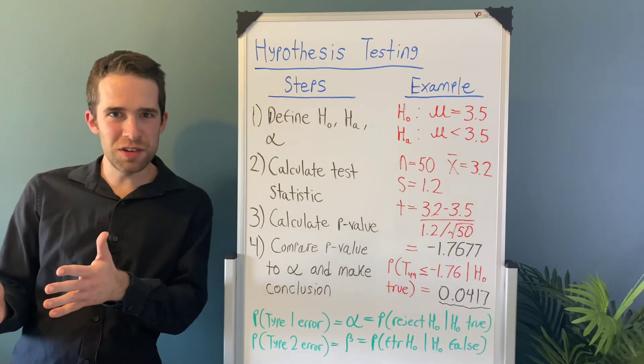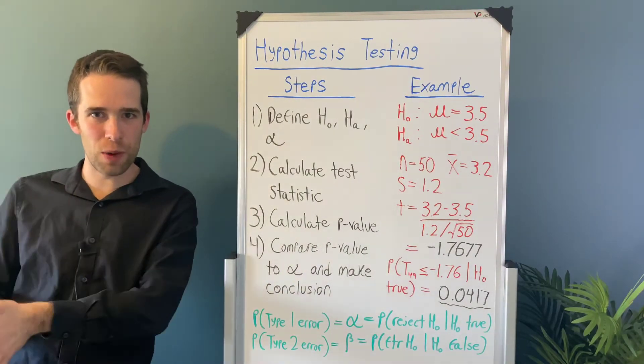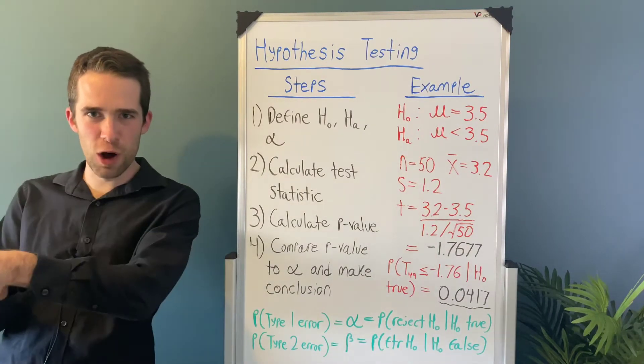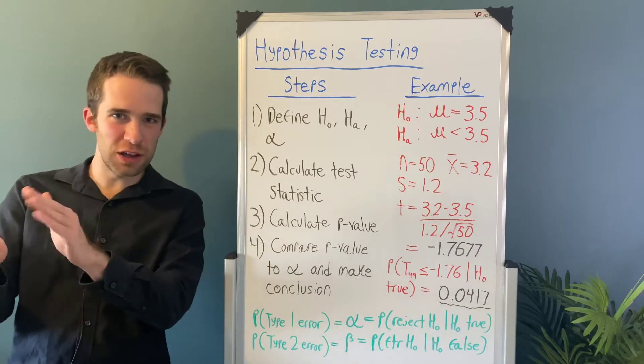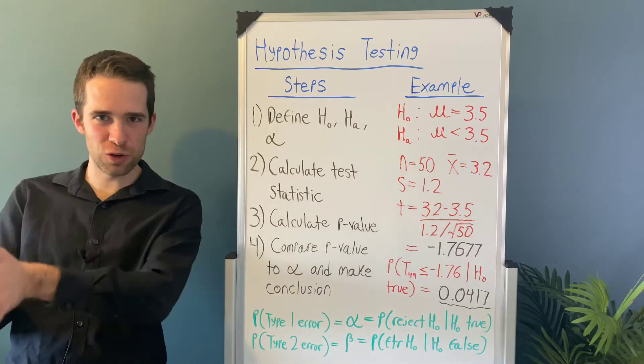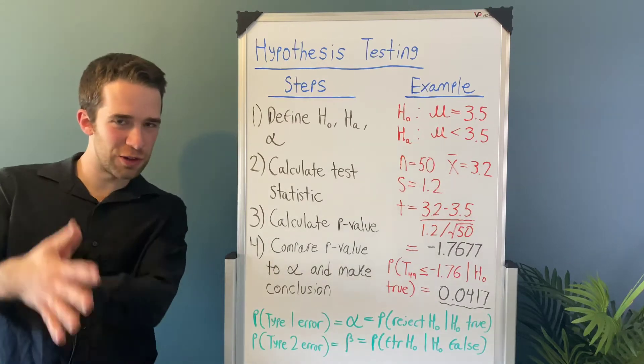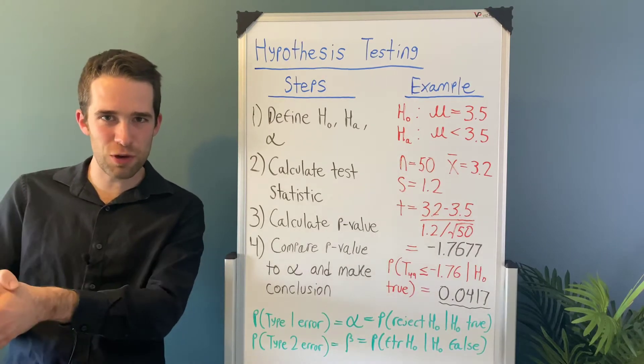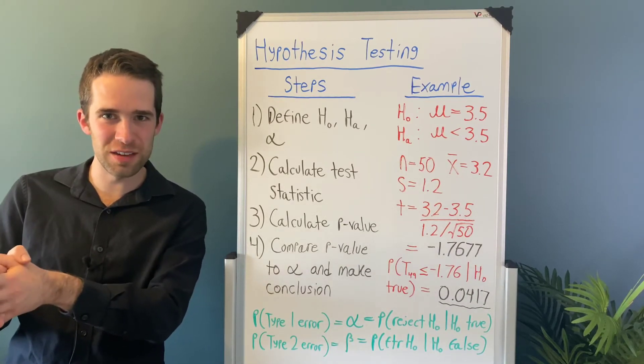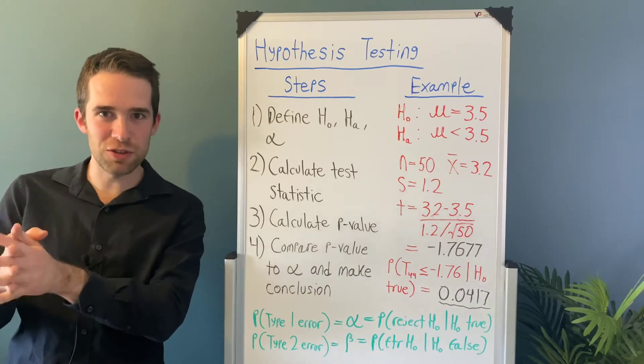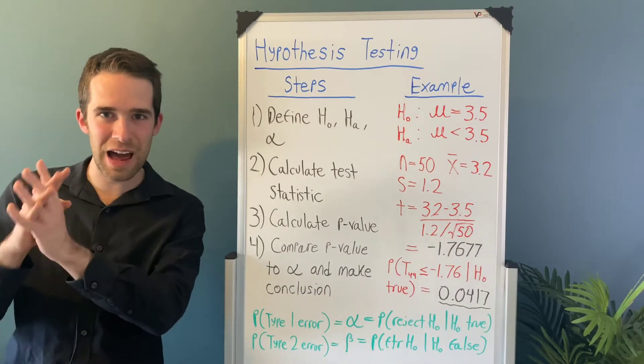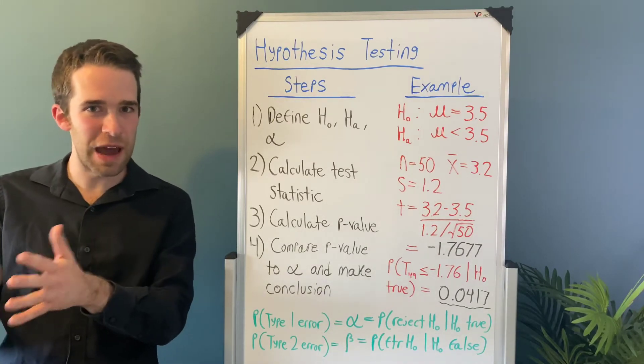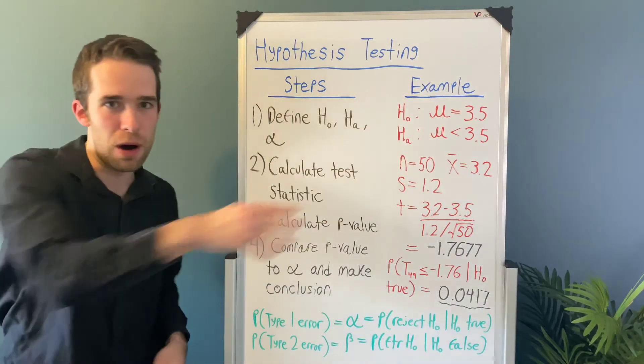Now as far as the hypotheses are concerned, these are statements about a parameter. We represent the null and alternative hypotheses with H₀ for the null, and then Hₐ or H₁, you'll sometimes see it written for the alternative hypothesis. Now let's actually start with the alternative hypothesis first, and that's whatever it is that we're trying to demonstrate by using the statistical test in the first place. In our example, we actually wanted to demonstrate that the population mean hours Americans use their phones is less than 3.5 hours. So we're going to set up Hₐ as μ < 3.5.